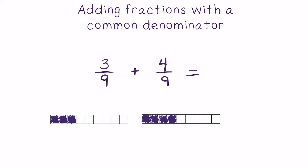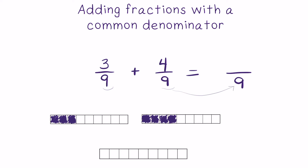Because we are adding a certain number of ninths plus a certain number of ninths, our answer is also going to be represented in ninths. As you can see here, we've taken the common denominator of 9 and carried it to the sum. The denominator of the sum is also going to be ninths, which is represented in this visual below.